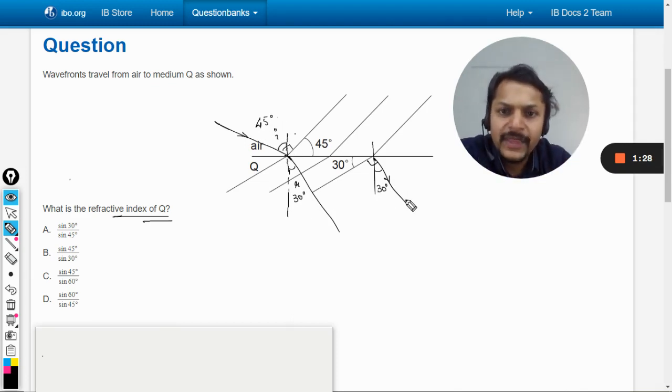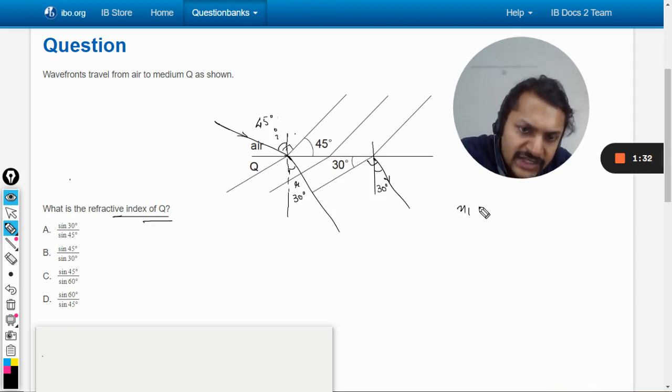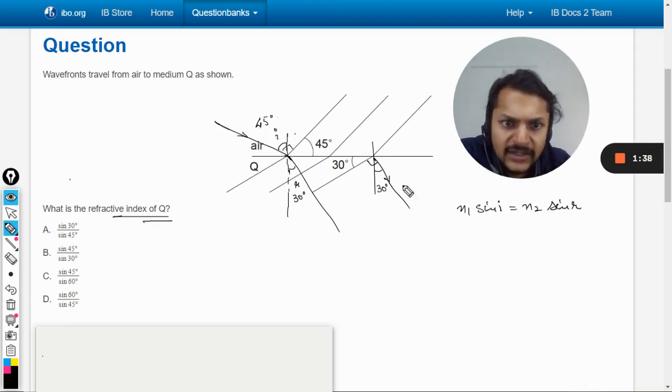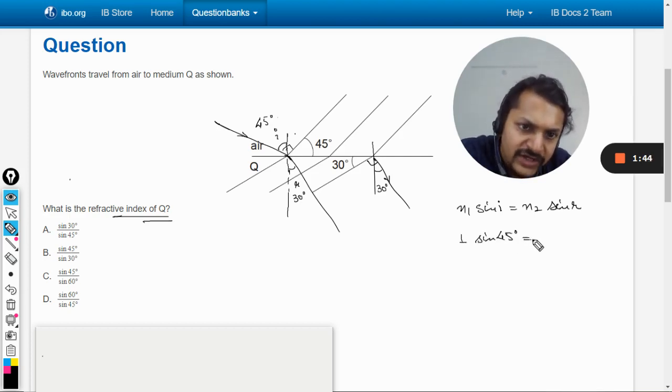So now we can apply Snell's law here. So according to Snell's law, n1 sin i is equal to n2 sin r. And n1 will be taken as 1, sin 45 degrees. n2 is unknown and the angle will be 30 degrees.